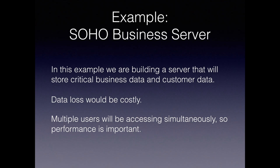Next use case: SOHO business server. This is what we're talking about with keeping customer data, sales data — things that are irreplaceable, basically a business server. Or in your home, dealing with family photos and whatnot. Data loss would be costly, either financially or emotionally. Assuming multiple users are accessing it simultaneously, performance is important. So a single-drive solution — like Unraid pulling files off a single drive — striping is helpful because you get multiple drives working at once, whereas a single drive would impair your performance.